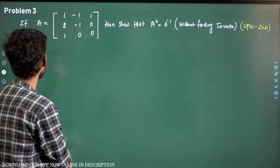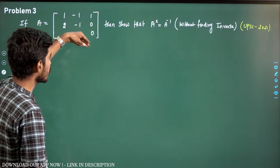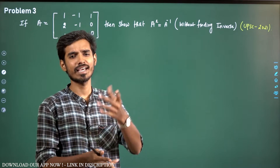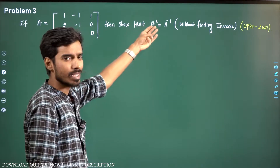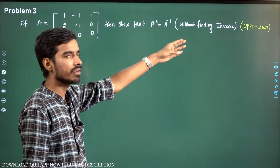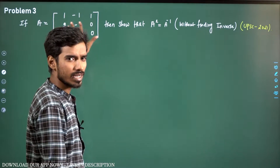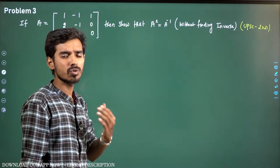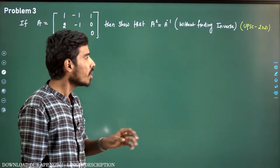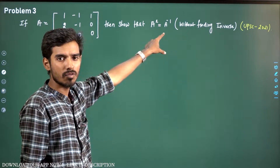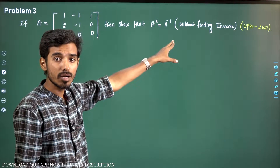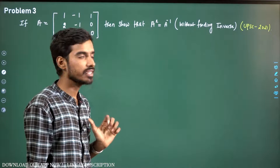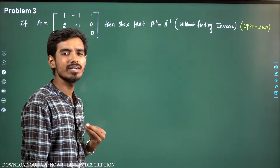What is problem number 3? If A equals the matrix [1, 2, 1; -1, 0, 1; 0, 0, 0], show that A squared is the same as A inverse. We need to show A squared equals A inverse without finding the inverse of A. You know how to find A inverse — one way is A inverse equals 1 over determinant of A times adjoint of A — but we must show A squared equals A inverse without using that.